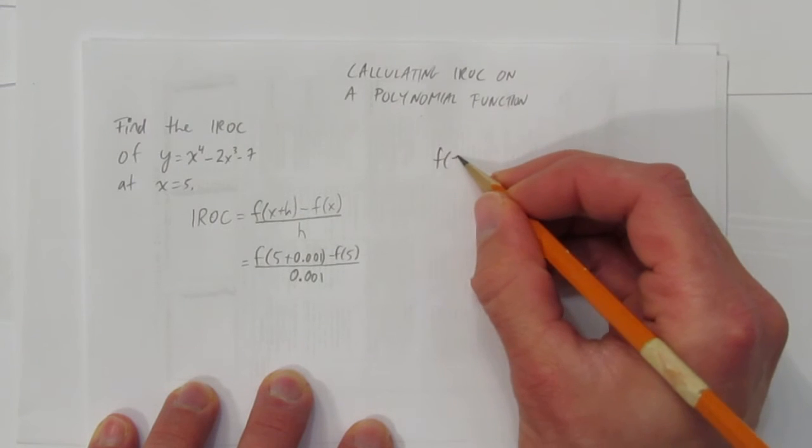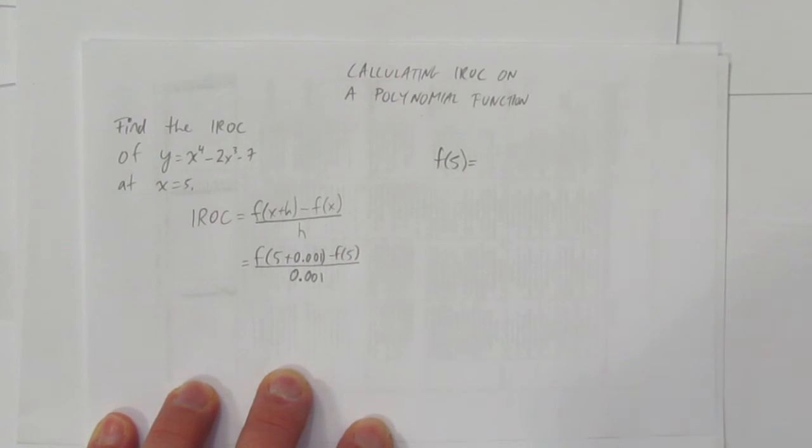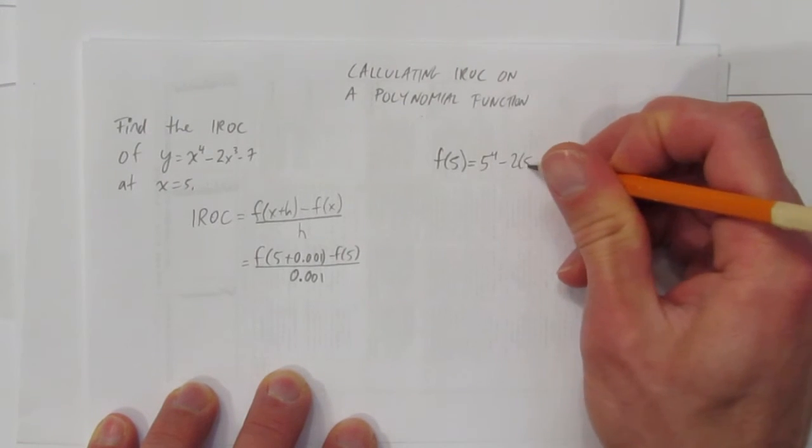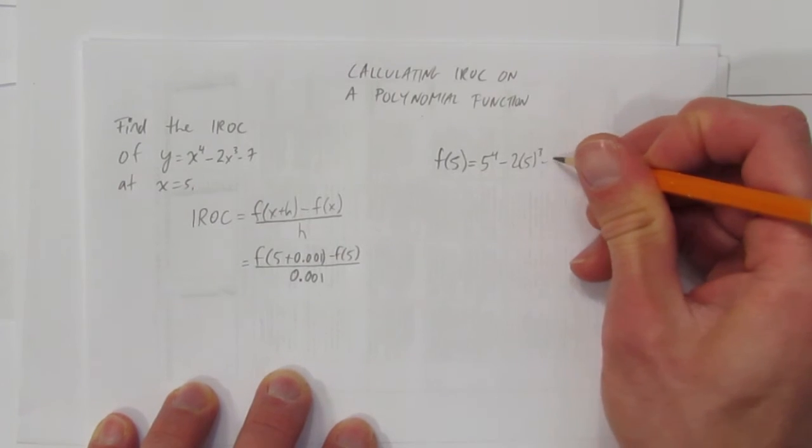So, on the side, we want to calculate what's the value of the function at f equals 5. That is, we want to know what's 5 to the power of 4 minus 2 times 5 to the power of 3 minus 7.